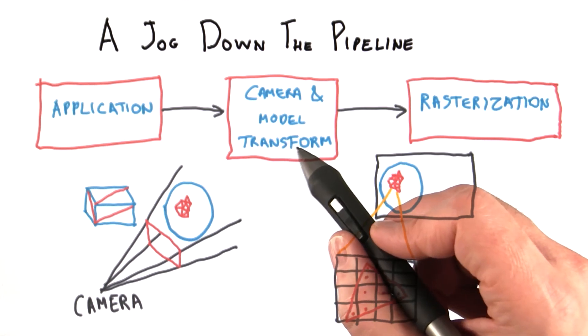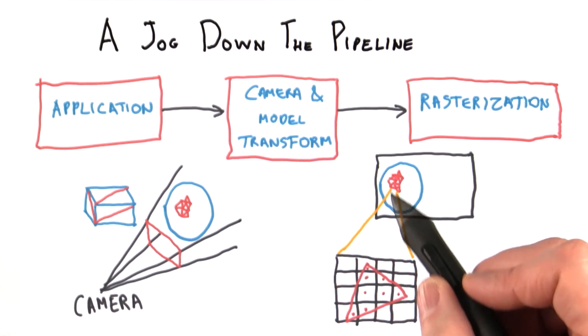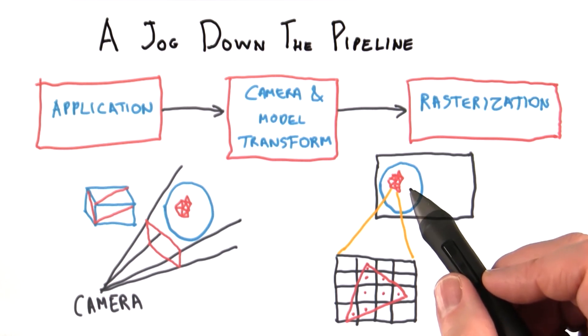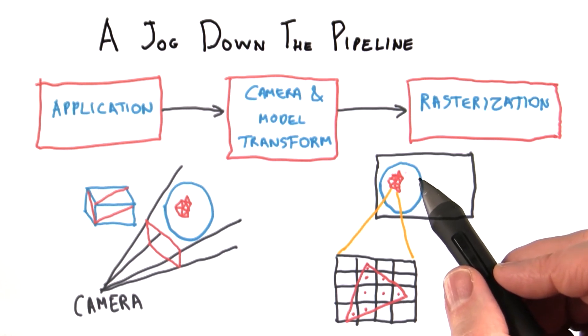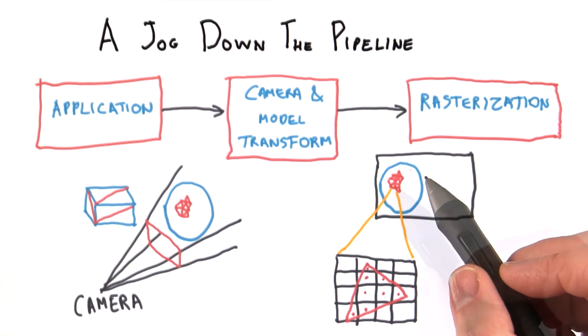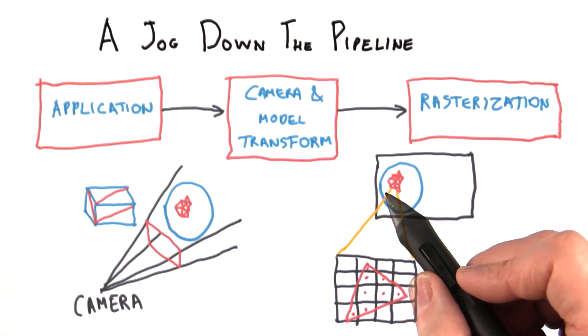The camera and modeling transforms compute the location of each triangle on the screen. If the triangle is partially or fully inside the frustum, the three points of the triangle on the screen are then used in a process called rasterization. If a triangle is slightly off the screen, it gets clipped and is turned into more triangles.